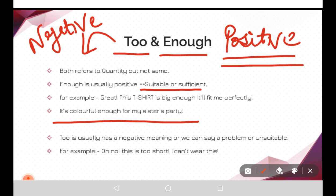For example with 'too': 'Oh no, this t-shirt is too short, I can't wear this.' So 'too' is used for negative, problematic, or unsuitable situations. In summary, both 'too' and 'enough' refer to quantity, but 'enough' is used for positive things and 'too' is used for negative things.